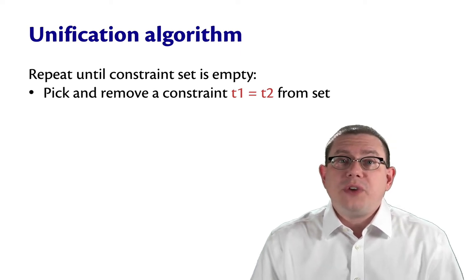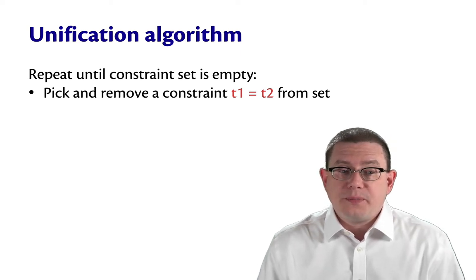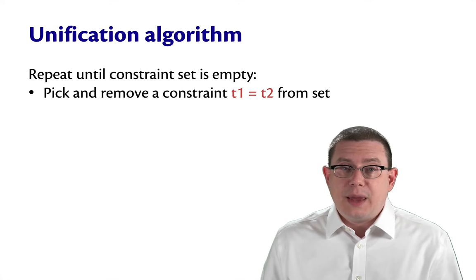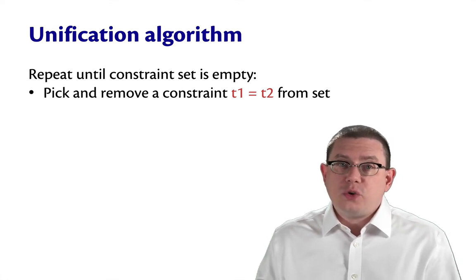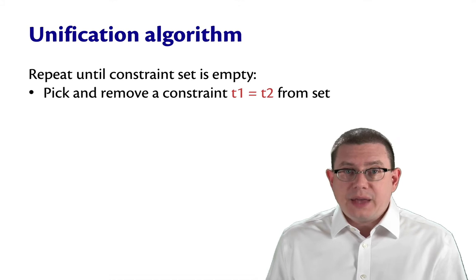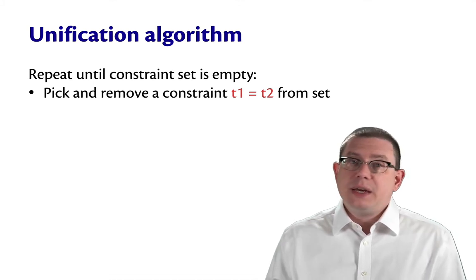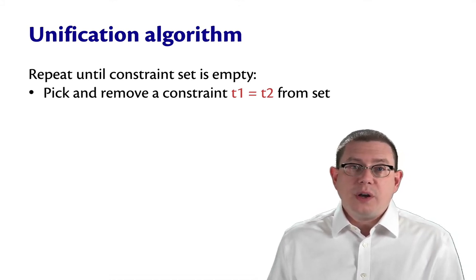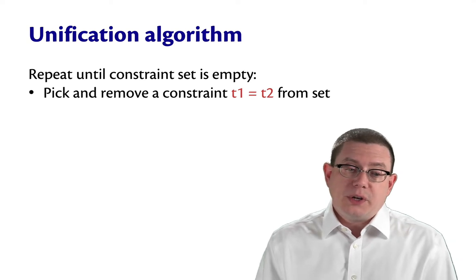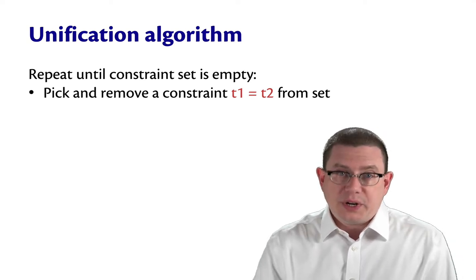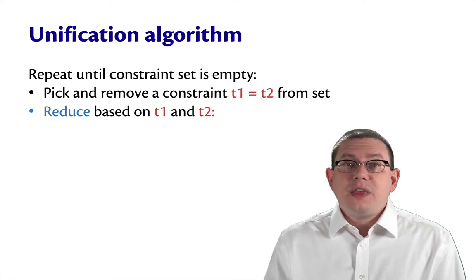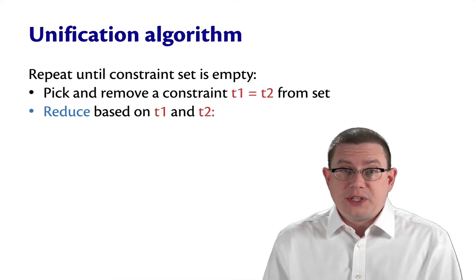Here's the unification algorithm. Until the constraint set is empty, we will continue to do the following. First, we'll pick some constraint from the set — it doesn't matter which one, though which one we pick can potentially lead to different solutions. We'll pick some constraint t1 equals t2 and remove it from the set. Then we'll take that constraint and reduce it somehow.